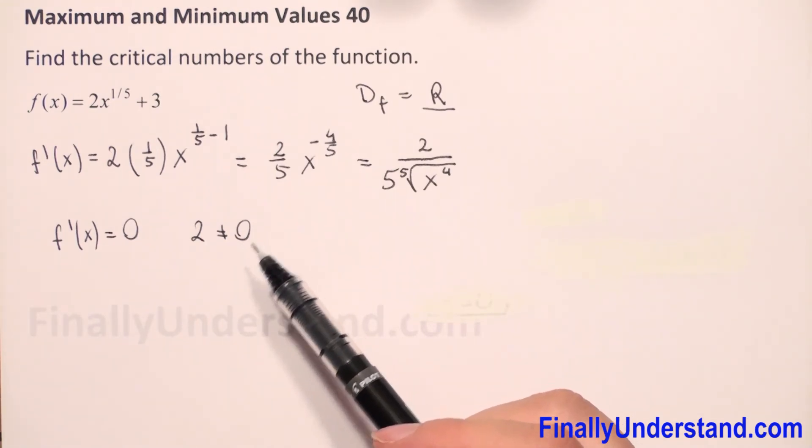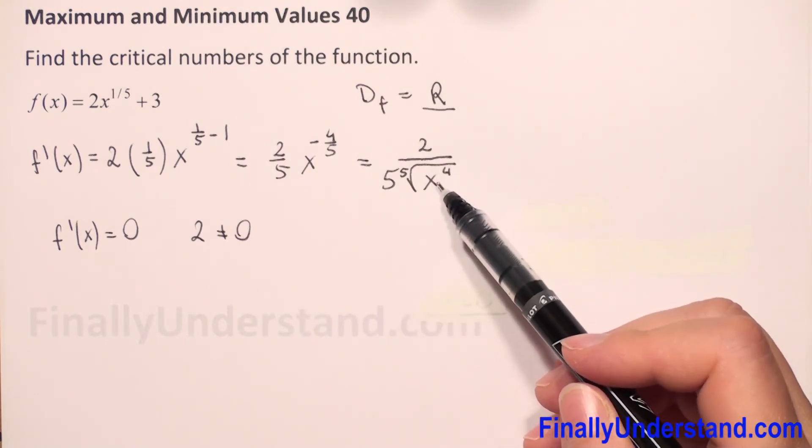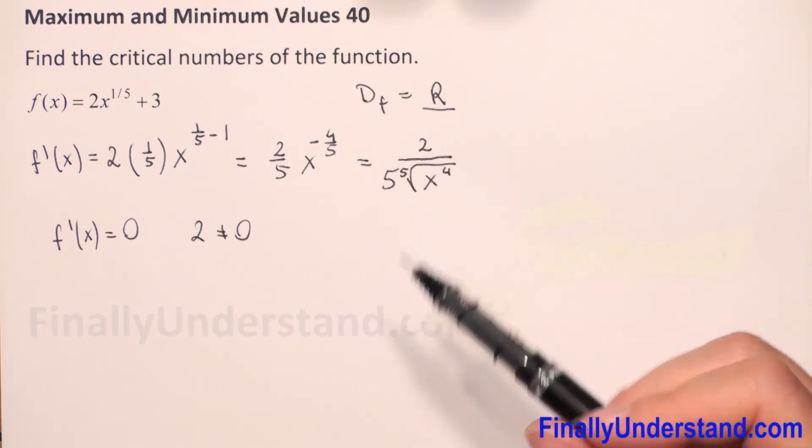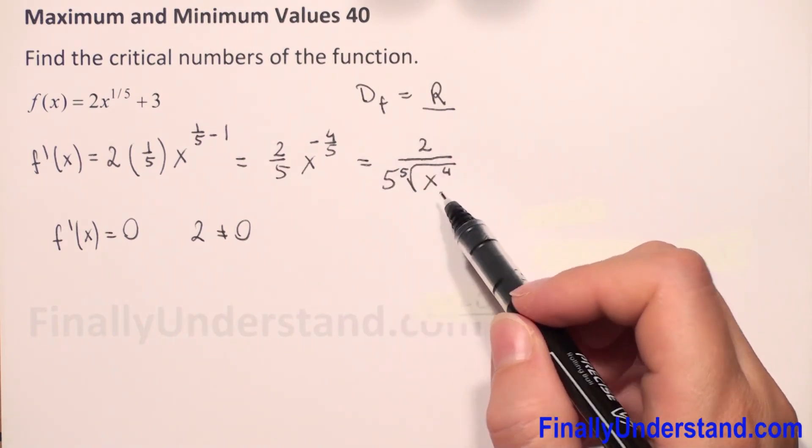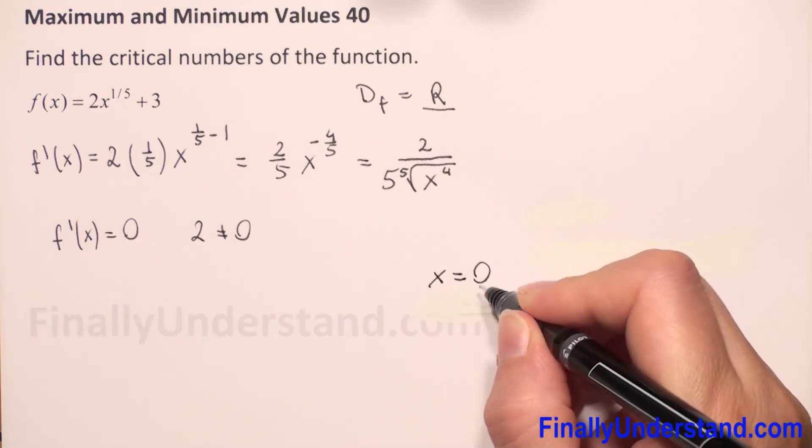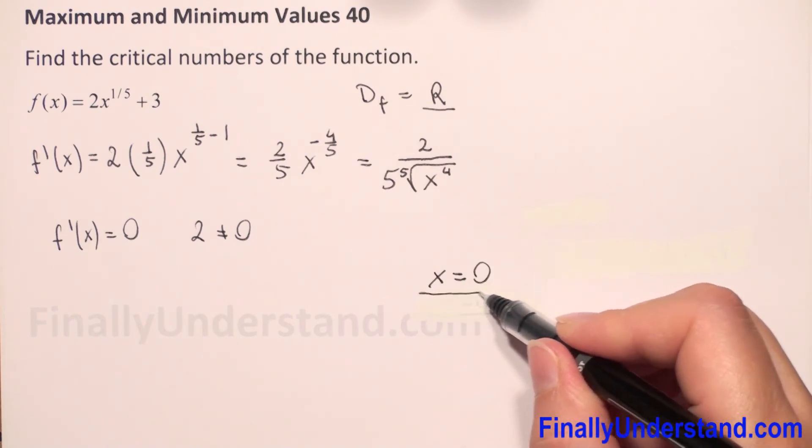For some numbers, we have here a fraction. We know that we cannot divide by zero. So when x equals zero, this expression will be undefined. So we have one critical number: x equals zero, because x equals zero belongs to the domain of our function.